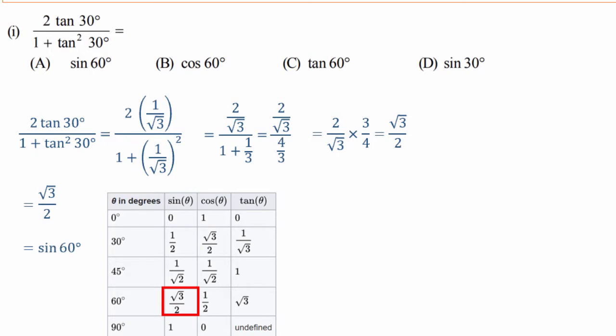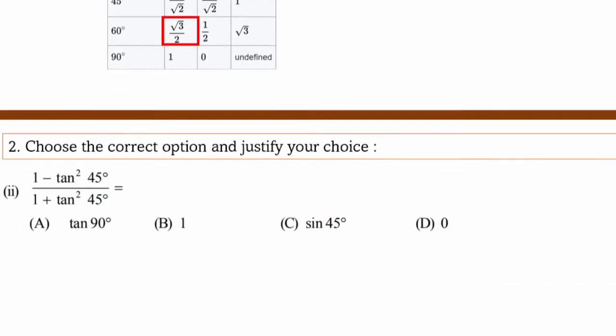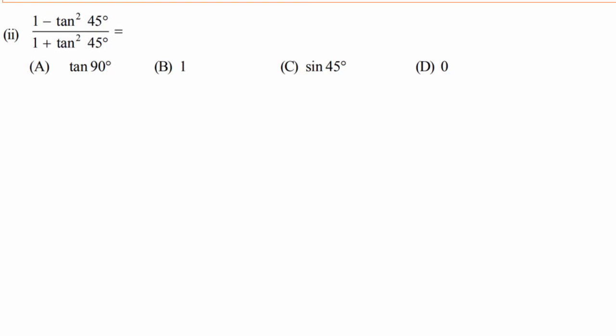The answer equals sin60, and that is the correct answer. For the second MCQ, the expression is: numerator is 1 minus tan squared 45, and denominator is 1 plus tan squared 45.